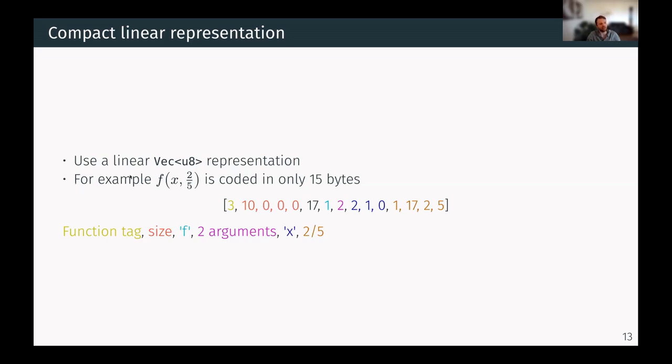Simply a vec of u8. So for example, f of x, 2 over 5, you can code that in only 15 bytes. Here there's an example where this 3 is a tag that we have a function instead of a variable, for example.